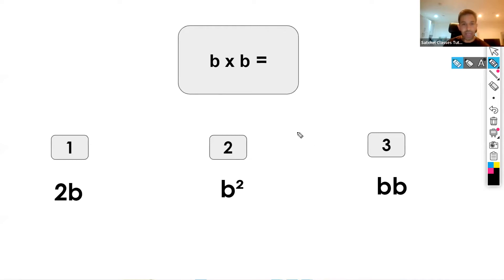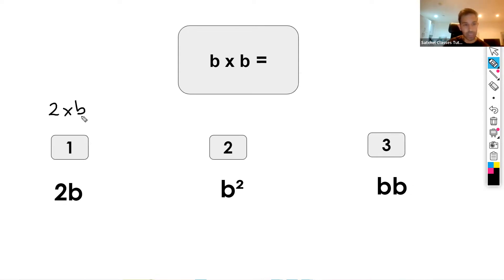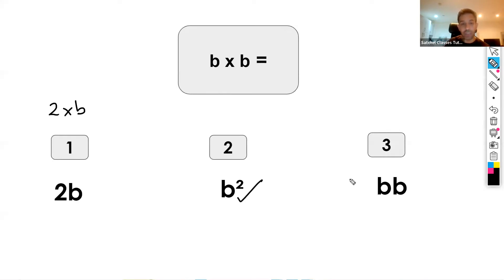Which one of the three options is the correct one? b times b — you can pause the video and have a go. Can it be 2b? Well, 2b is 2 times b, but we have b times b, meaning we're squaring b. So the correct answer is b squared. Now bb is not necessarily wrong, but in terms of algebraic notation, b squared would be the correct notation.